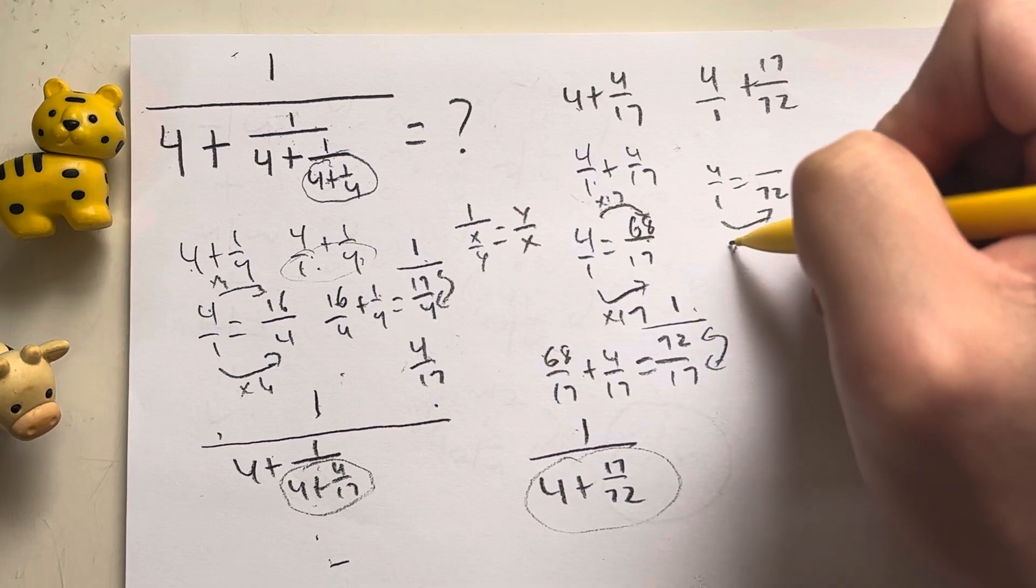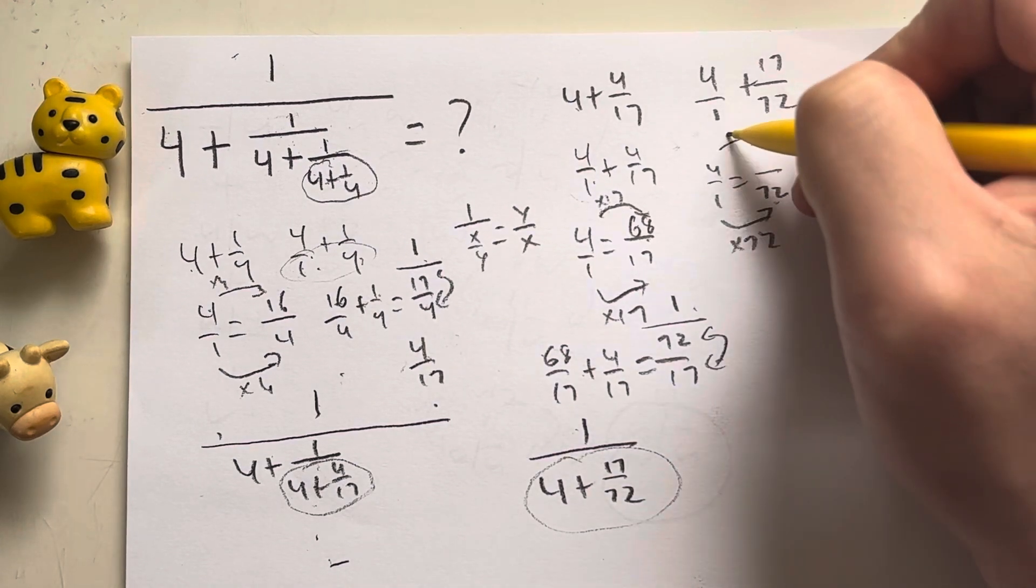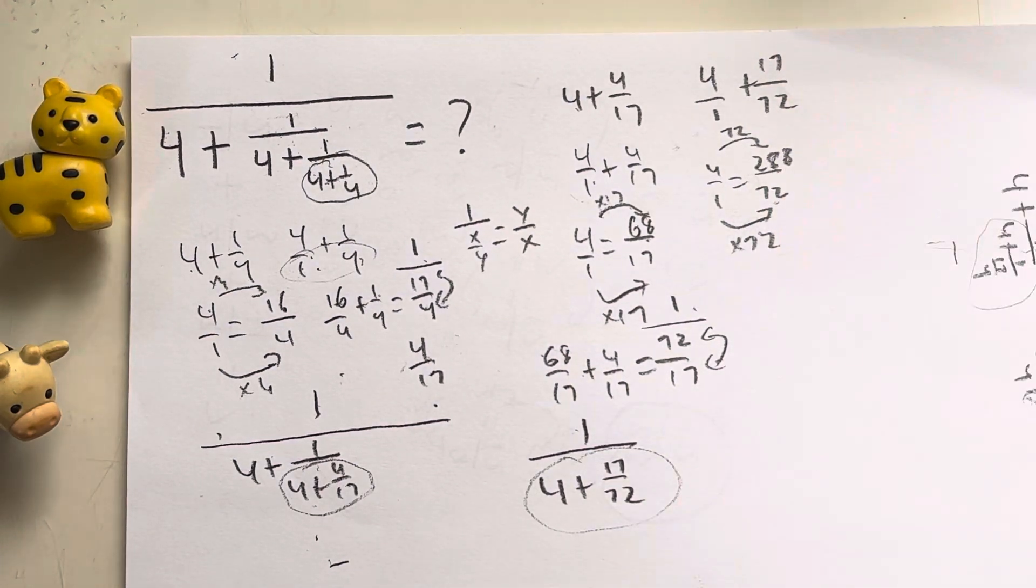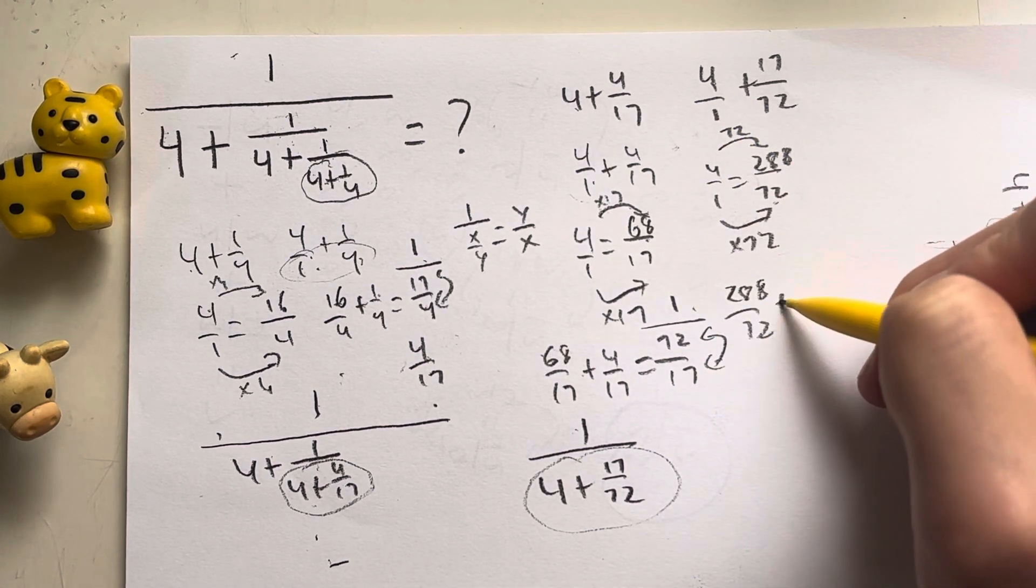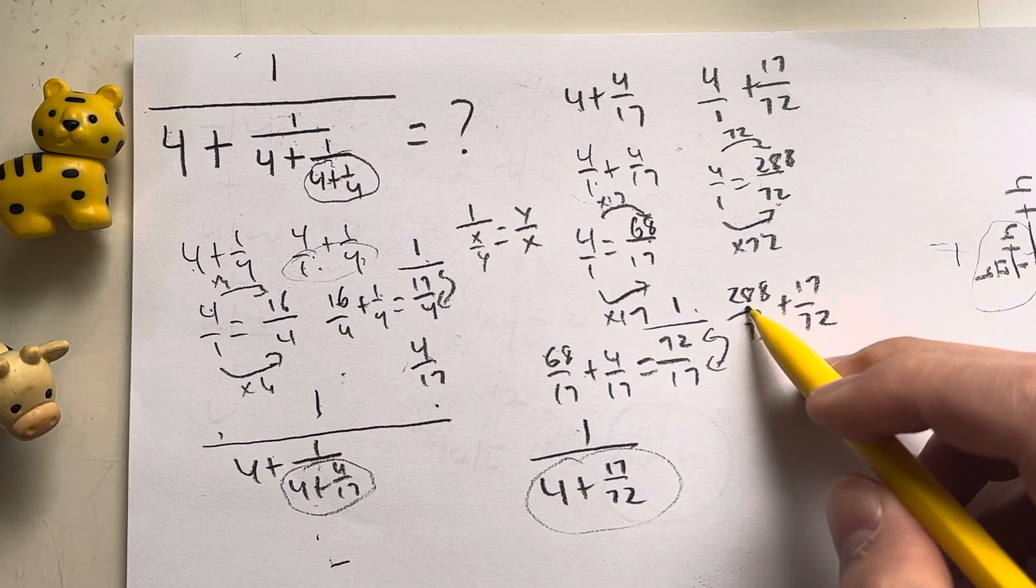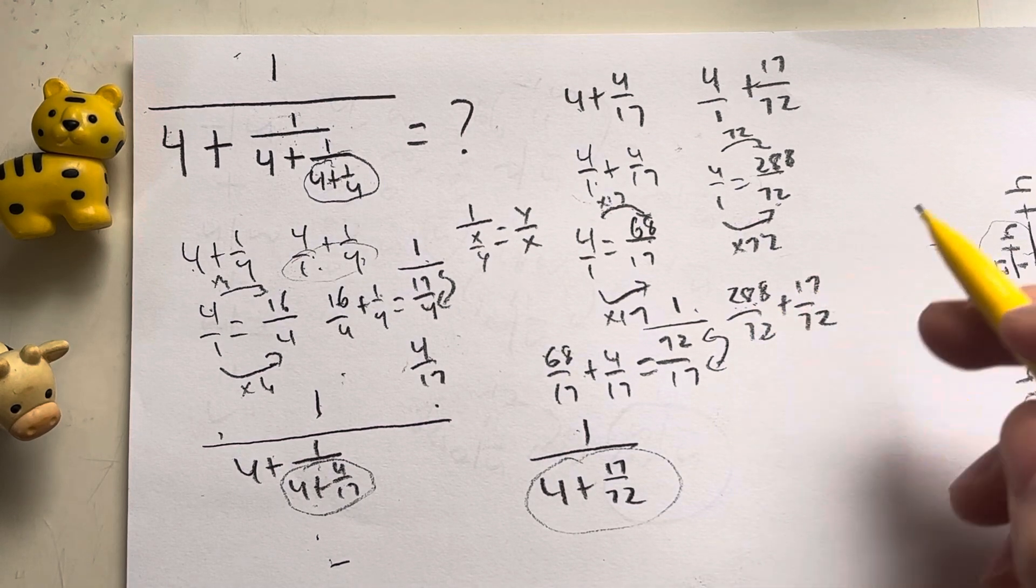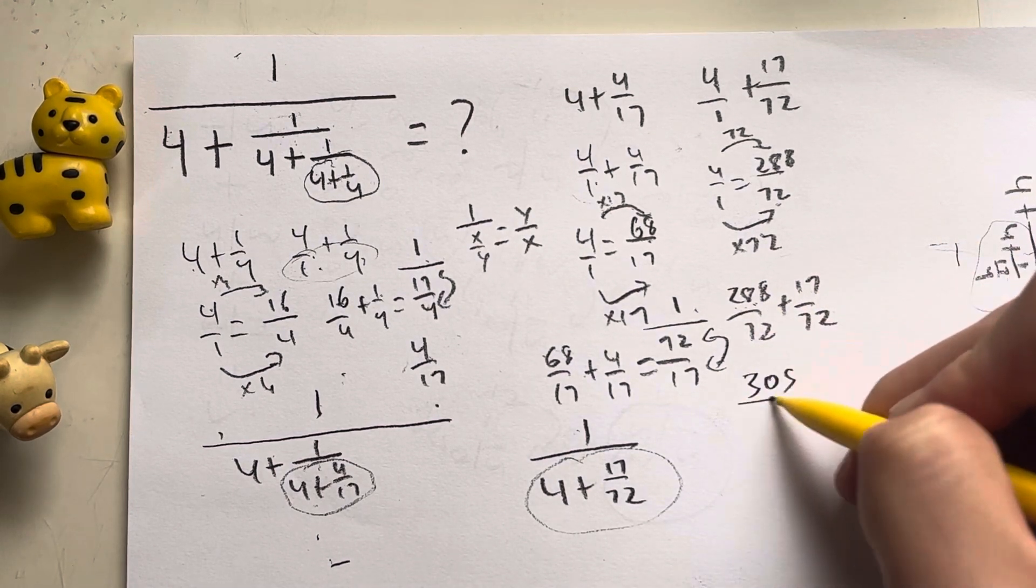So 1 times 72 is 72. 4 times 72 is 288. So 4 over 1 is the same as 288 over 72, plus 17 over 72, giving me 288 plus 17 is going to give me 305 over 72.